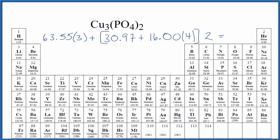So now we'll take 63.55 and multiply that by three, that gives us 190.65 grams per mole.